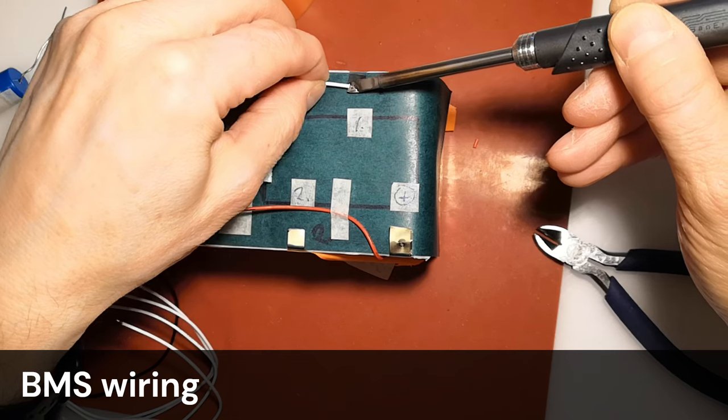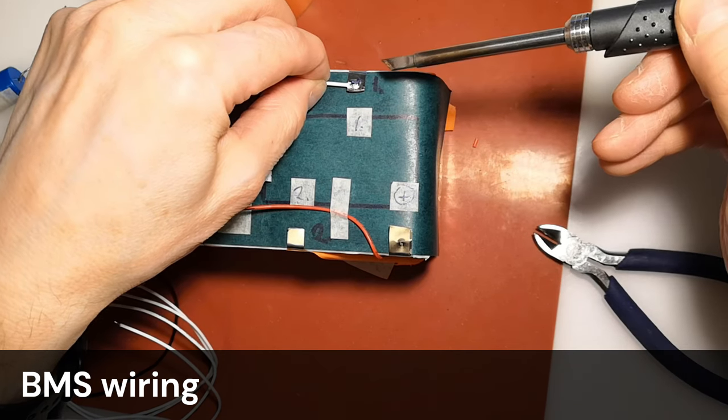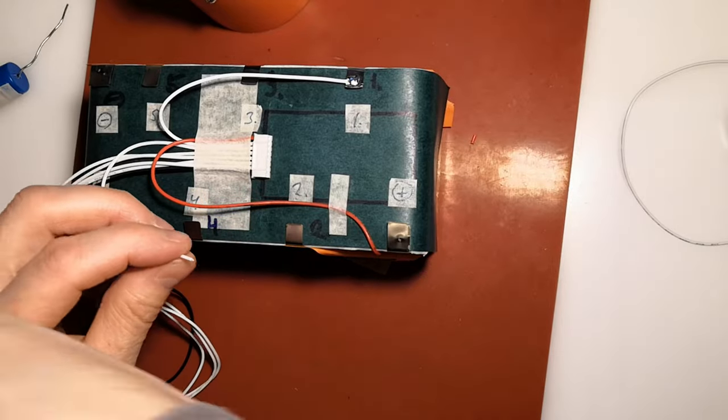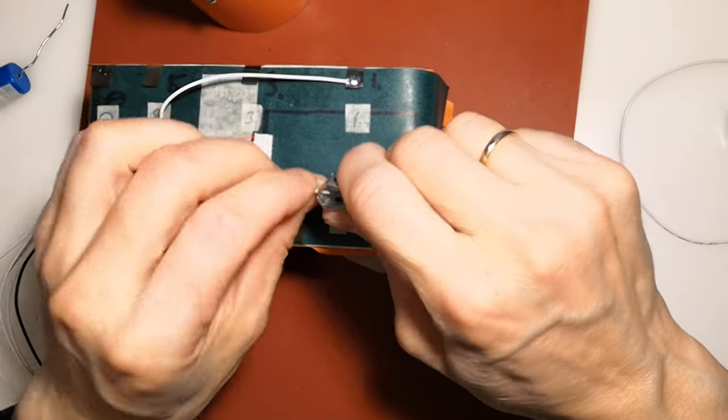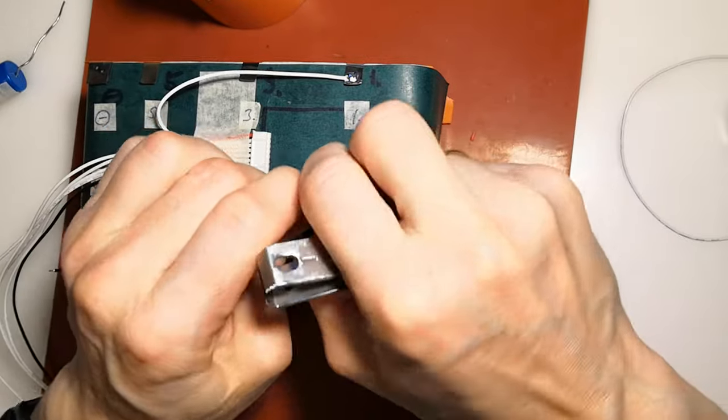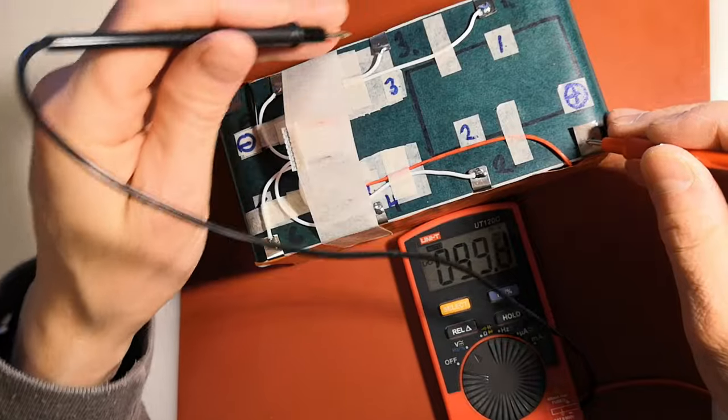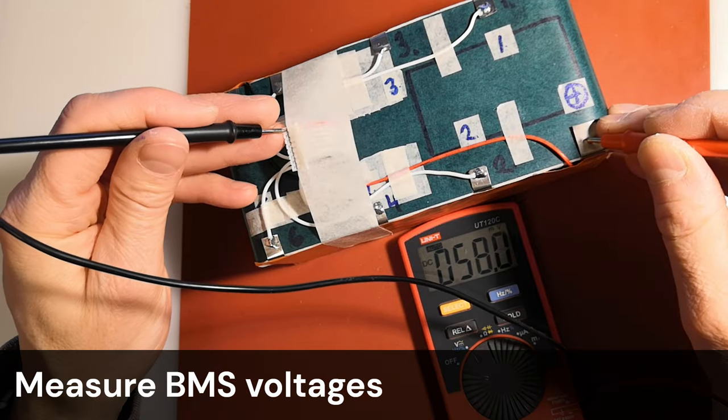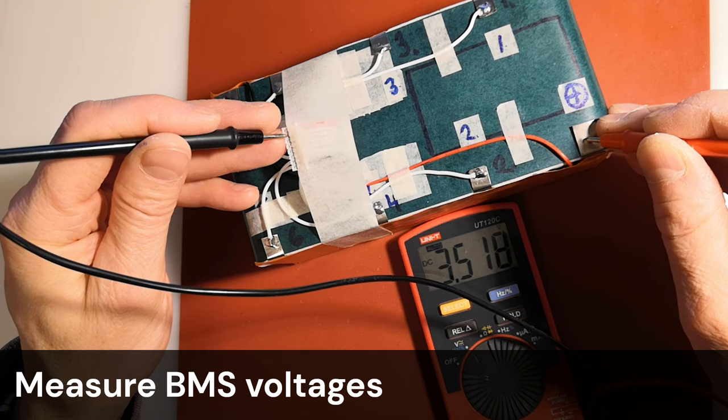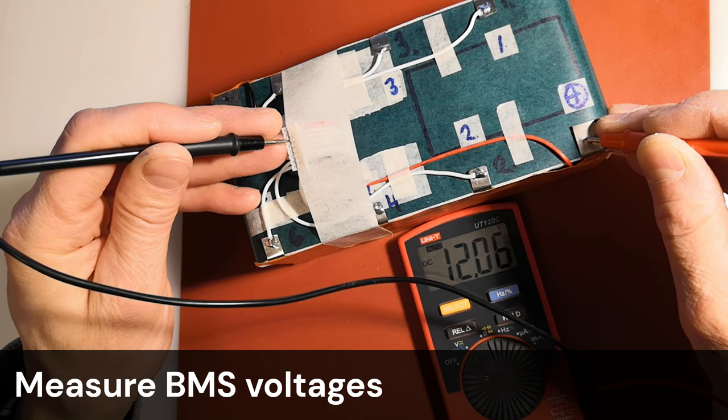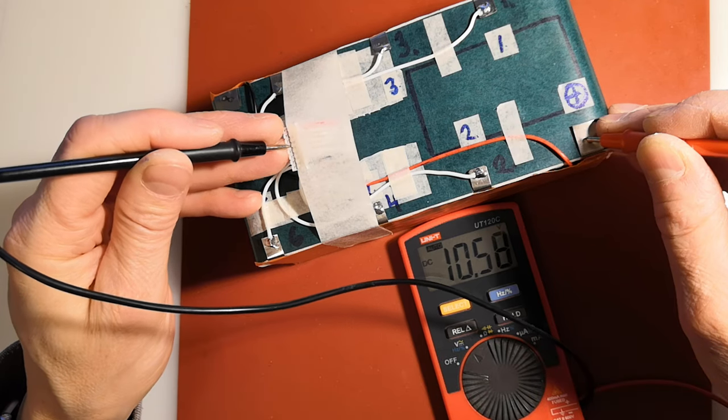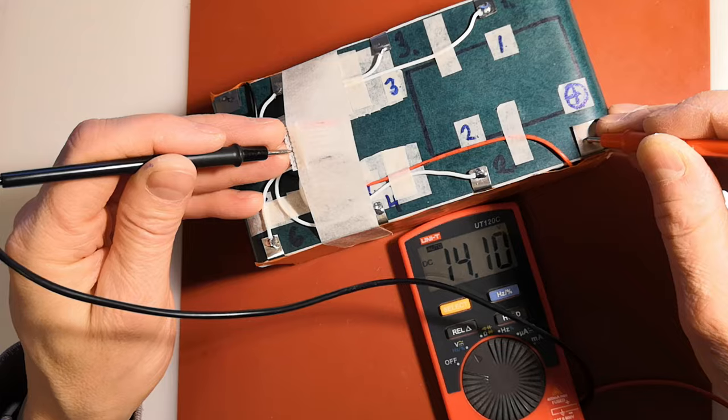Next, I'll arrange the wires of the BMS module in order. This must be done carefully, incorrectly connected wires can cause a short circuit or damage the battery or module. I've measured voltages and numbered the strips in the correct order to avoid mistakes. Next, I'll measure the voltages again from the connector before connecting the module to ensure the module or battery doesn't get damaged. The voltage should increase by 3.5 volts when moving from one wire to the next. If the measurement shows this, the wires are connected correctly.